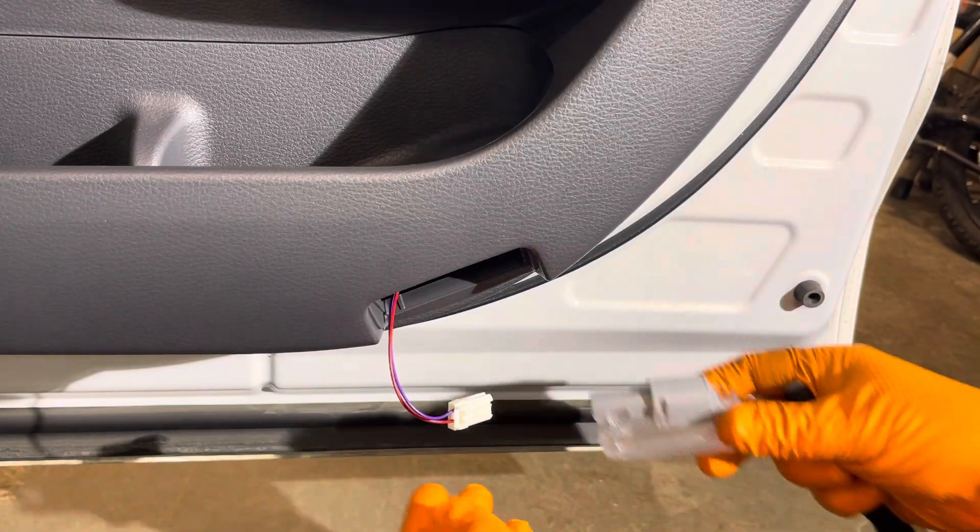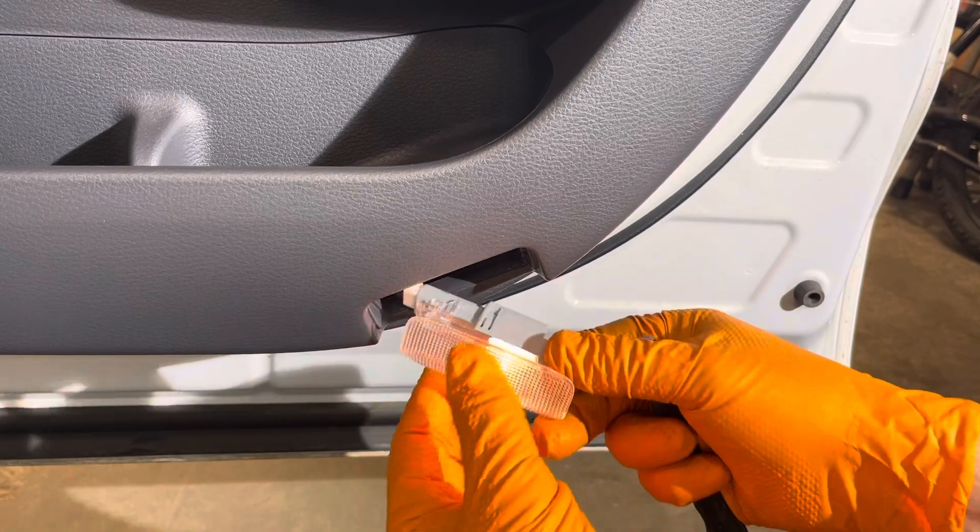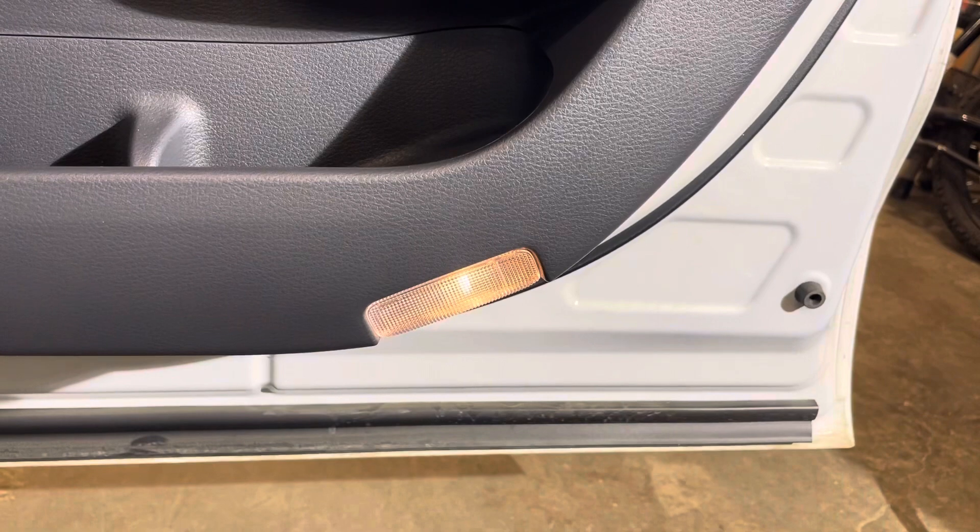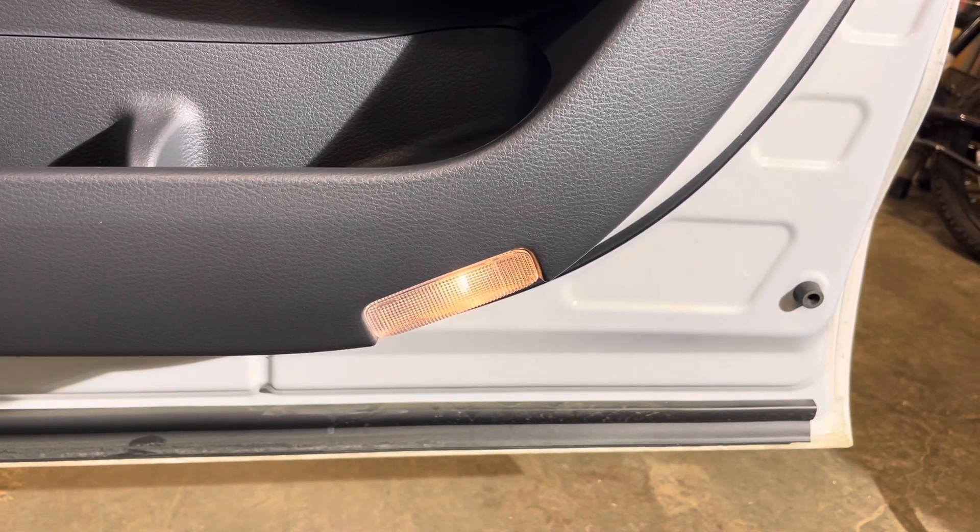To reinstall, reconnect the connector until it clicks, insert in the door this way, and clip it in. And there you go, door courtesy light bulb replacement is completed.